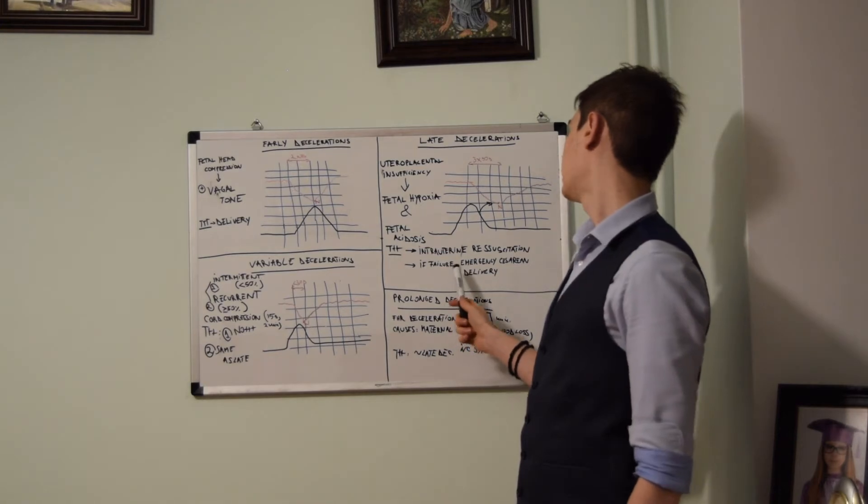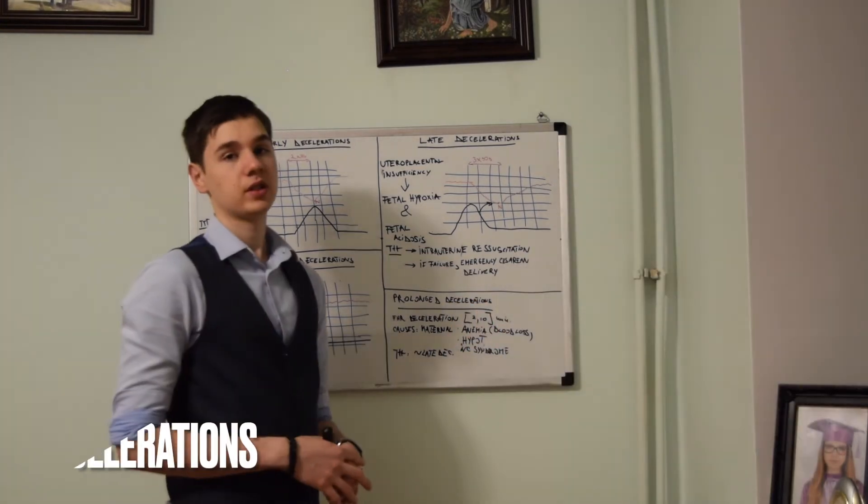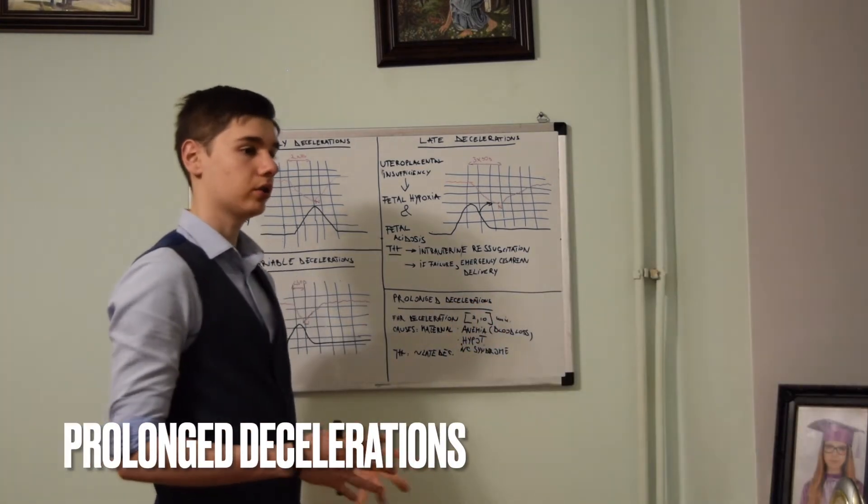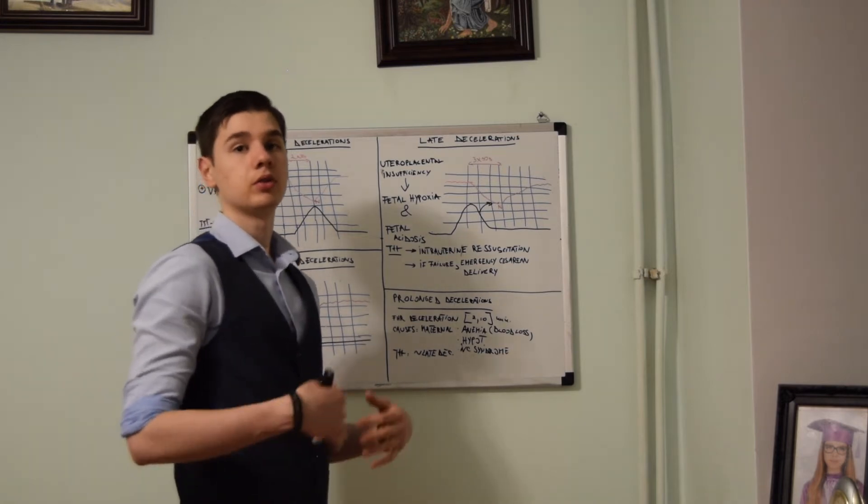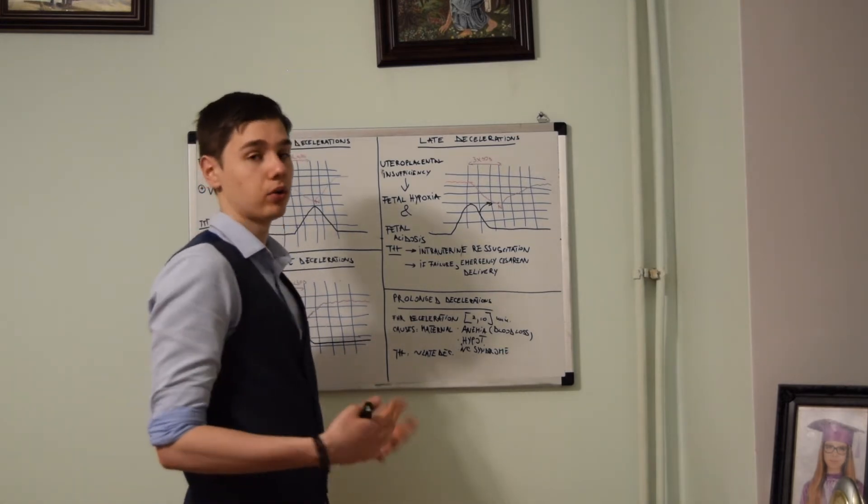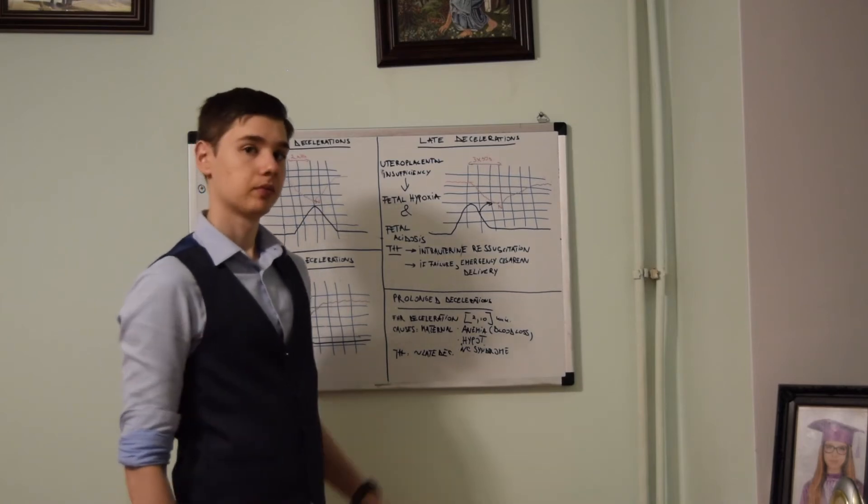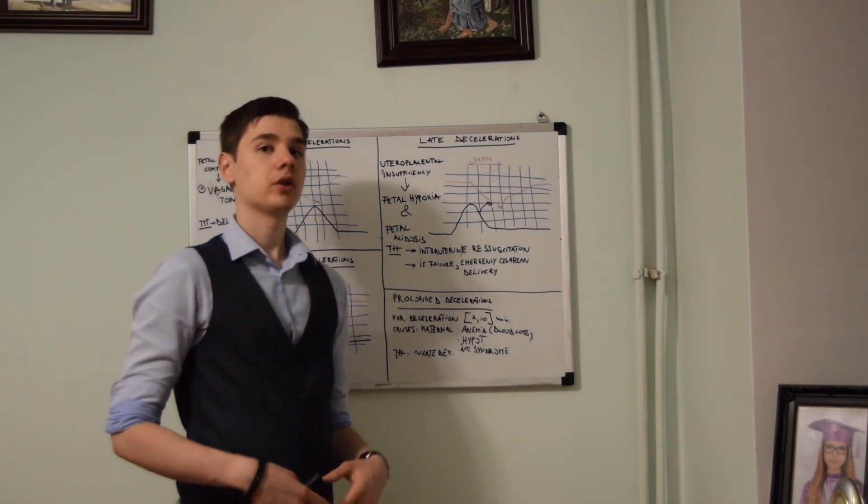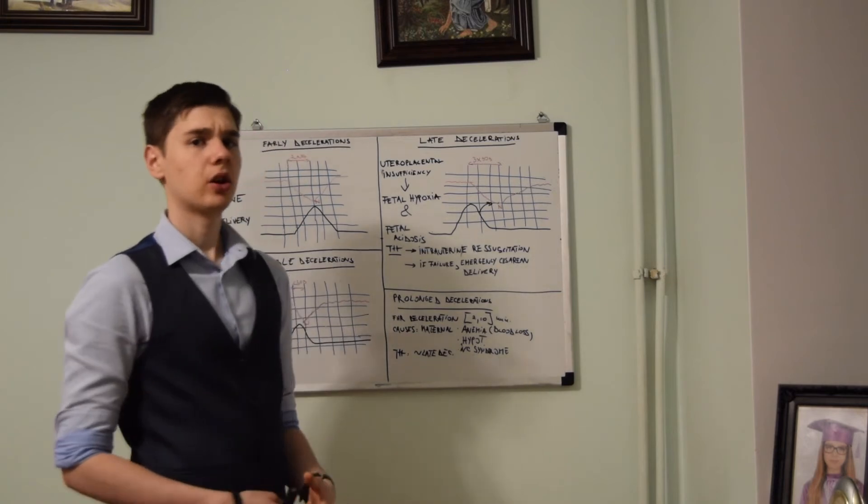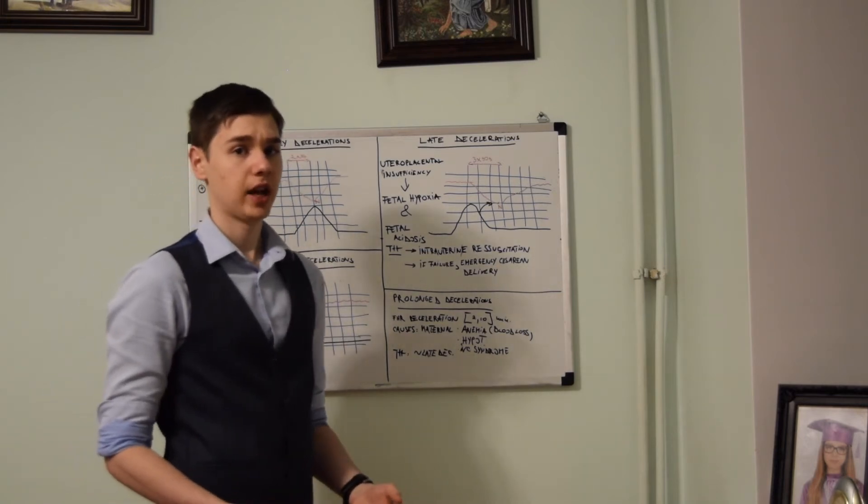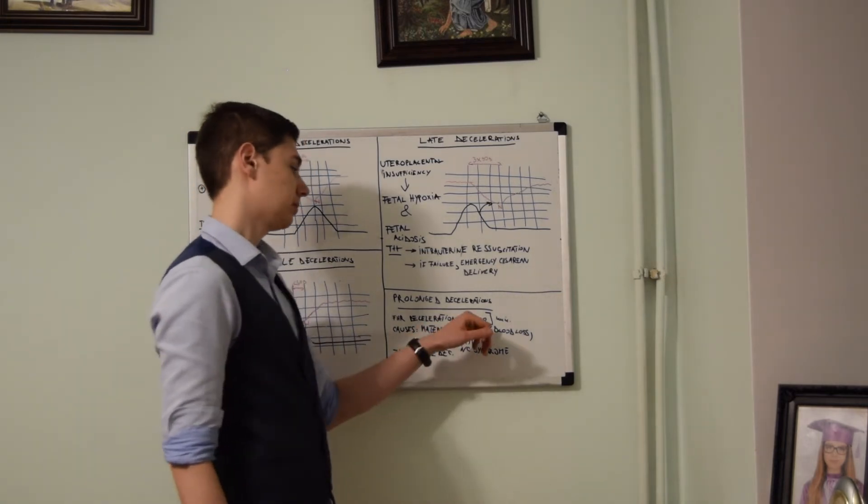Prolonged decelerations are usually caused by the mother losing blood, such as in trauma or hemorrhage, by an inferior vena cava syndrome, or by the mother being hypotensive. These are sustained contractions that take from 2 to 10 minutes.